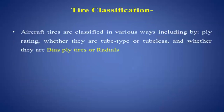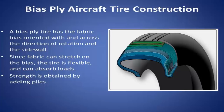Aircraft tyres are classified in various ways, including ply rating, whether they are tube type or tubeless, and whether they are bias ply tyres or radials. A bias ply tyre has its fabric bias oriented across the direction of rotation and the side wall. Since fabric can stretch on the bias, the tyre is flexible and can absorb loads. Strength is obtained by adding more plies — the greater the number of plies, the greater the strength of the tyre.